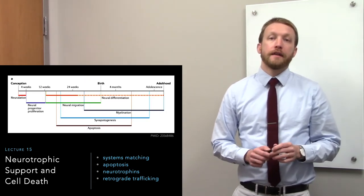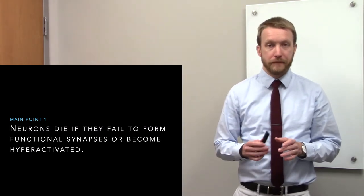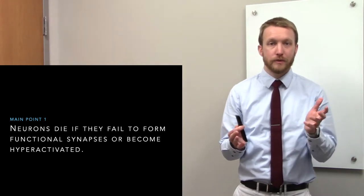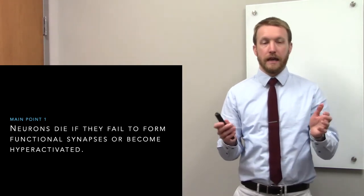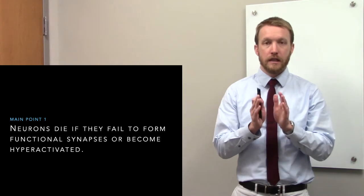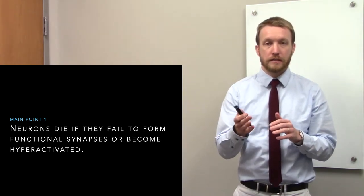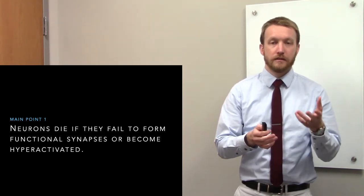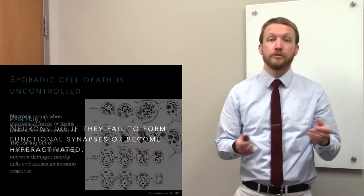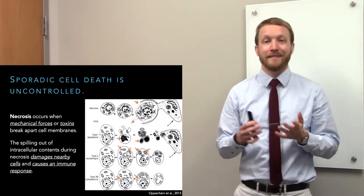Neurons want to find that baby bear range of activity. They don't want to be too active because they'll die, and they don't want to be too inactive because they'll die. They need to have a nice level of activity where they have some functional synapses but they're not excited to the point of death. Death can come in two flavors: controlled and uncontrolled.